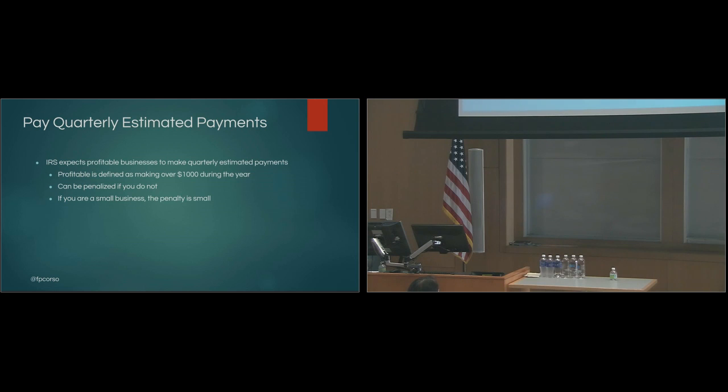Quarterly estimated taxes. A lot of people don't do this. I know I didn't to start with, but you really should. Essentially, the IRS expects any profitable business to make quarterly taxes. And a profitable is defined as making over a thousand dollars during the year. Most people, that'll be a client or two, so most people in this industry, once you start freelancing or doing agency work, you're going to be profitable enough that you're supposed to do this. However, now while you can be penalized, if you're a small business, the penalty is usually very small, so that's why I didn't do it the first little bit, but you're supposed to. And there's a variety of ways you can do that, but usually it's essentially, say last year you made thirty thousand, hypothetically. So, then this year you would make four equal payments of seventy-five hundred.